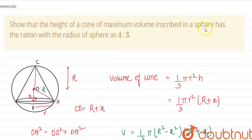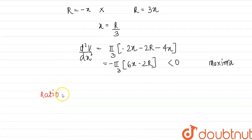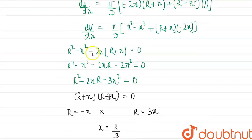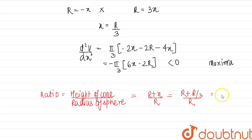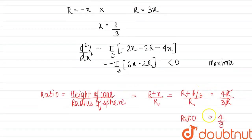We need to find the ratio of the height of the cone to the radius of the sphere. The height of the cone is R + X, so the ratio is (R + X)/R. Substituting X = R/3: (R + R/3)/R = (4R/3)/R = 4/3. So the ratio for the maximum volume cone inscribed inside the sphere is 4 by 3. This is the required answer.